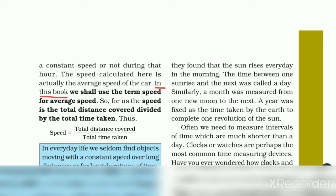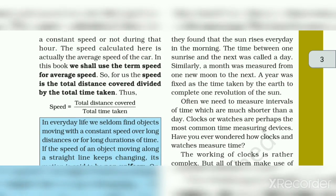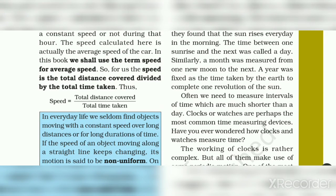In this book we shall use the term speed for average speed. So for us, the speed is the total distance covered divided by the total time taken. So now we have the formula: Speed equals total distance covered divided by total time taken.